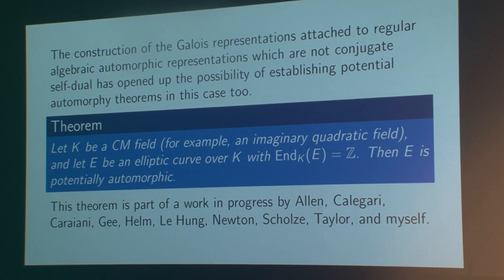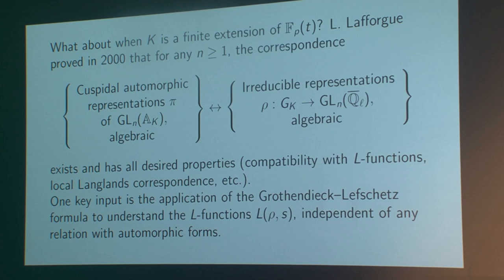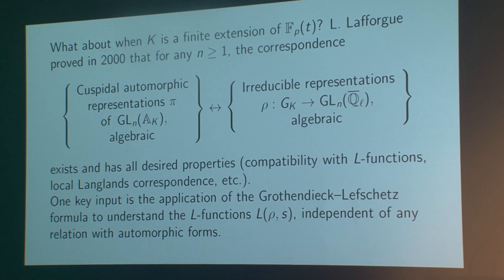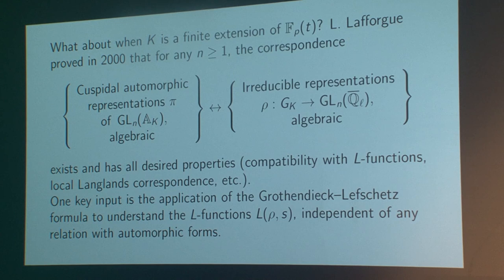Now I'll switch gears and talk about theorems proved in the context of global fields of positive characteristic. Here the landscape is strikingly different, because at first glance we know everything we could possibly want. In particular, we know the reciprocity conjecture as stated earlier, because Laurent Lafforgue proved it around the year 2000 and received the Fields Medal for his work in 2002. He proved there really is a bijection between cusp forms on one hand and irreducible representations of the Galois group on the other, provided you impose algebraicity conditions, which are very weak in the function field context. He proved not only this, but that the correspondence satisfies every property you could reasonably ask: compatibility with local L-factors, the local Langlands correspondence, and epsilon factors.